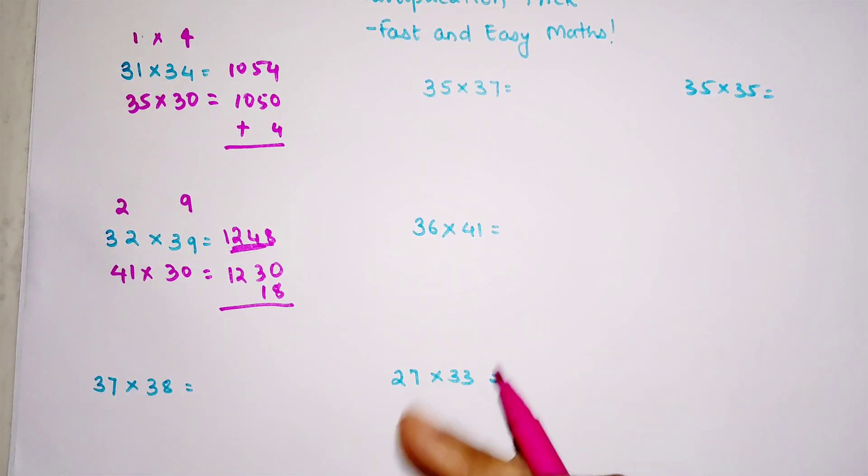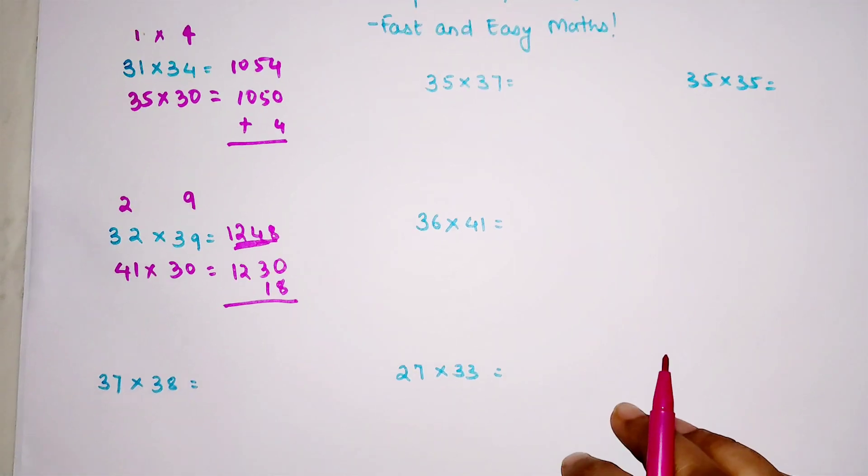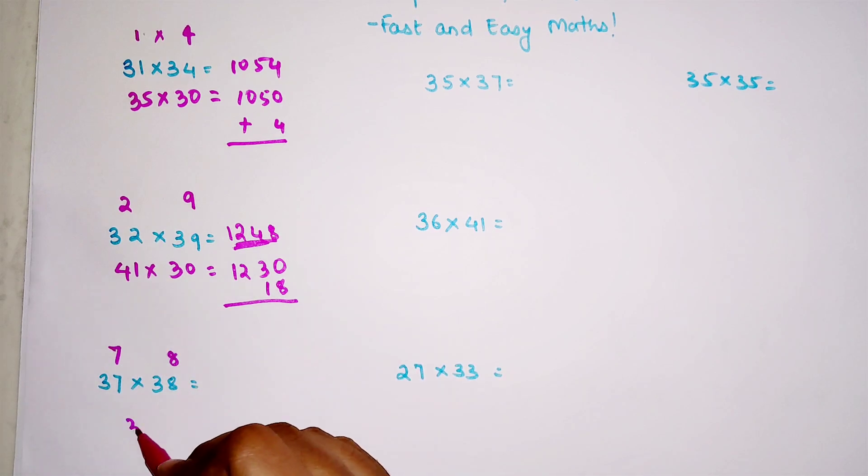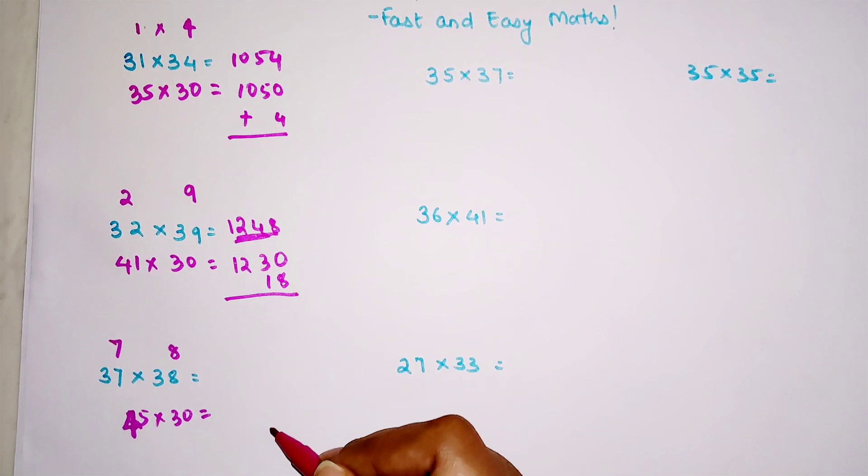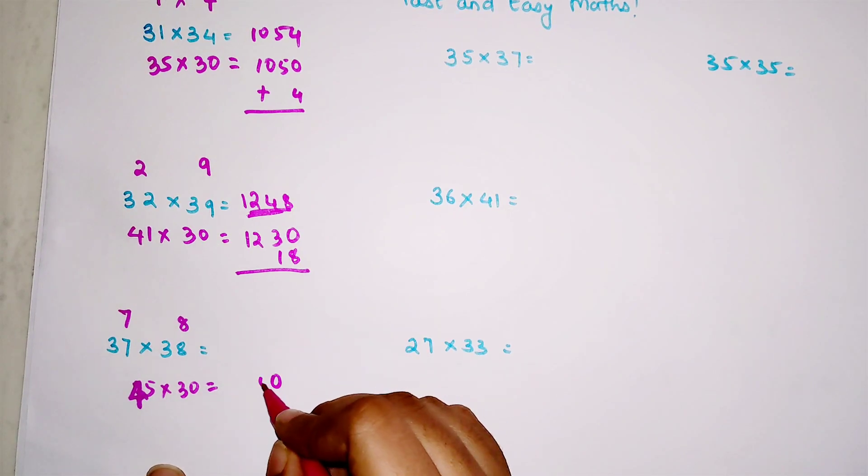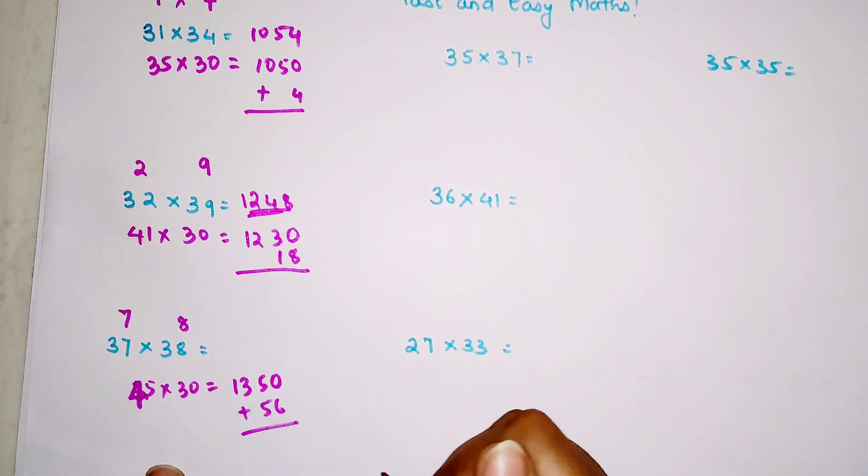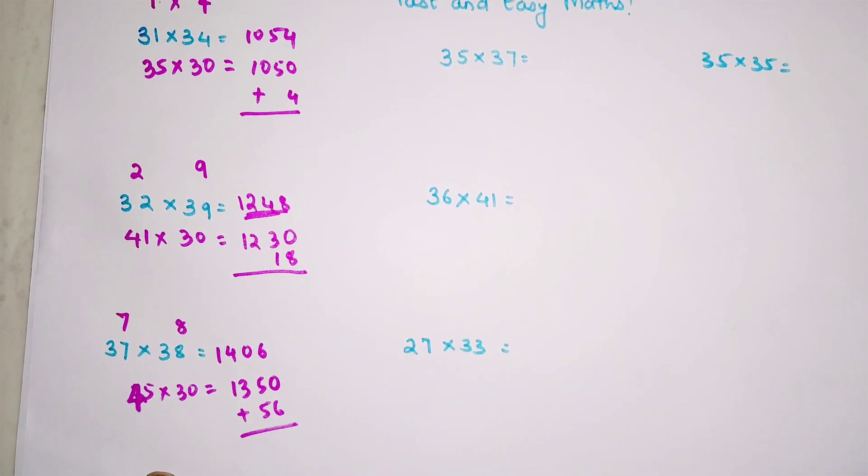For 37×38, this is 7 and this is 8. So 37 plus 8 is 45 into 30. That is 1350, and you are going to add 56 to it. Why 56? Because 7 into 8 gets you 56. So your answer is 1406.